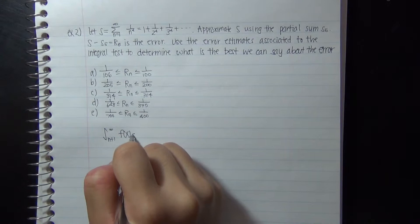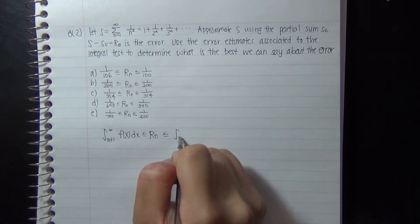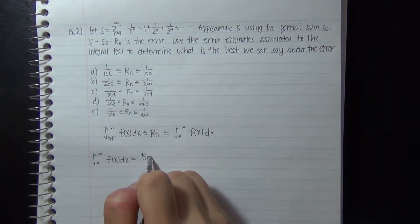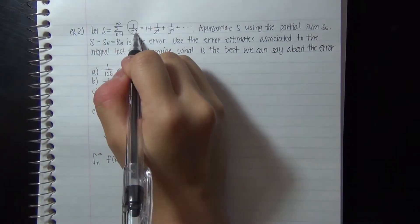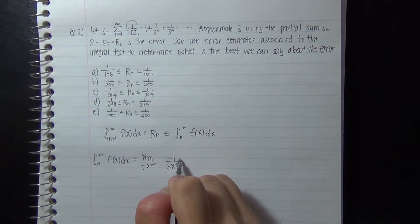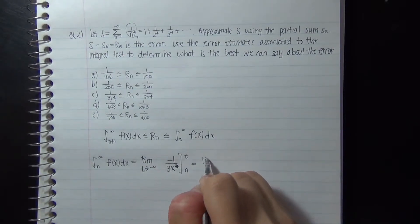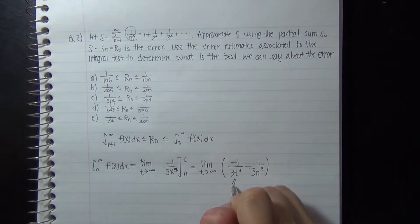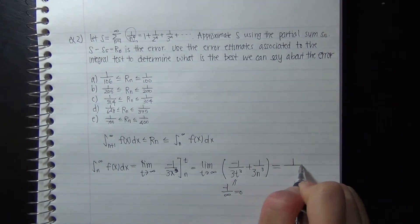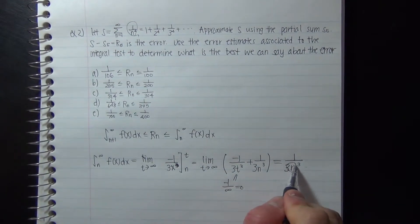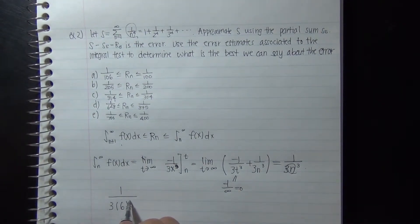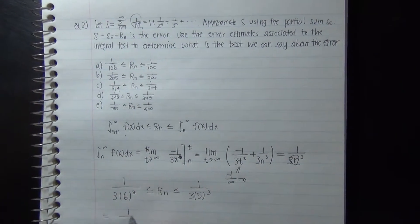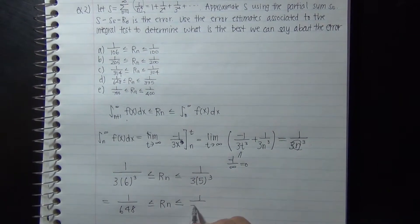The integral of f(x) = 1/x^4 is evaluated as the limit as t goes to infinity of the integral from n to t of 1/x^4 dx. The antiderivative gives negative 1/(3x^3), so applying the limit yields 1/(3n^3). Plugging in n+1 (which is 6, since n = 5), we get 1/(3 × 6^3) = 1/648. And for the upper bound using n = 5: 1/(3 × 5^3) = 1/375.